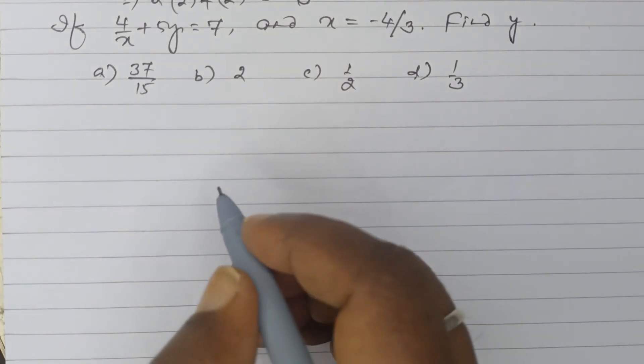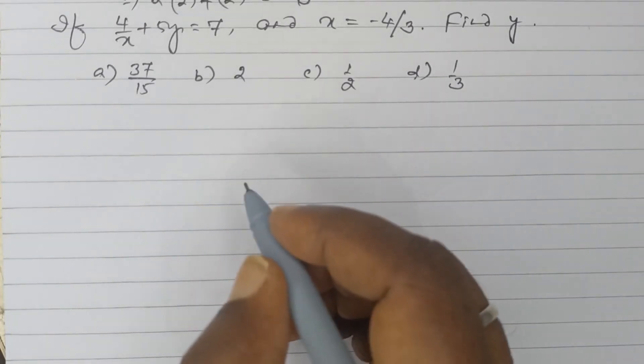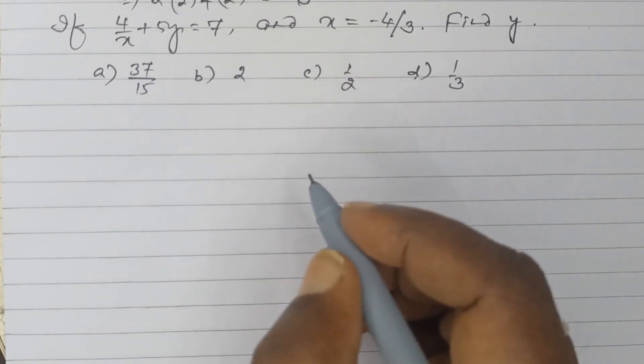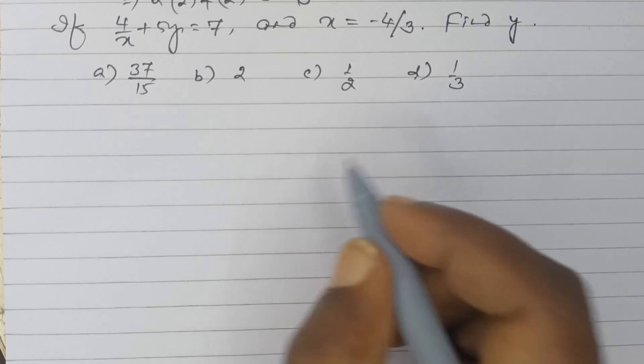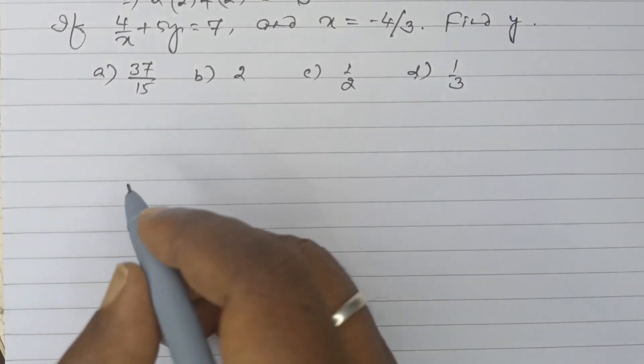If 4 by x plus 5y is equal to 7, and x is equal to minus 4 by 3, find y.